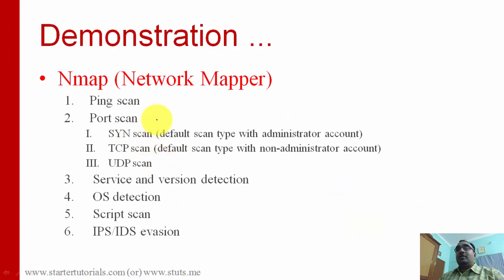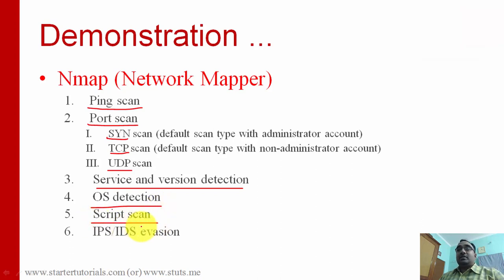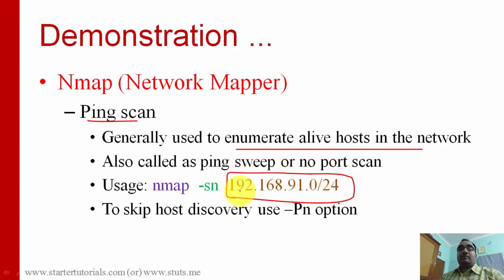A ping scan is used to list systems that are alive on a network. You can scan an entire subnet and get a list of all reachable systems. The option used is -sn (s for scan, n for ping scan). A SYN scan is based on how TCP works: the client sends a SYN packet, the server responds with a SYN-ACK, but the client does not send the final ACK.